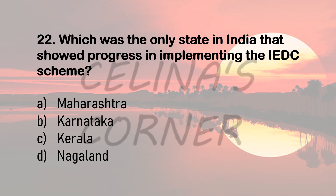Question 22. Which was the only state in India that showed progress in implementing the IEDC scheme? The IEDC scheme was implemented in 14 states, but it failed in most of them. There was only one state that made remarkable progress, and that was option C, Kerala.